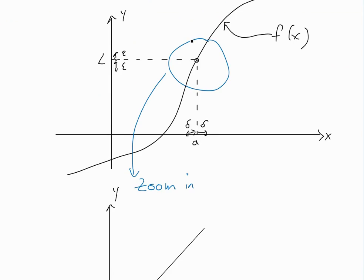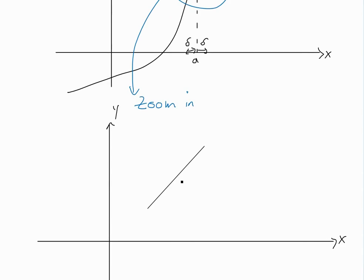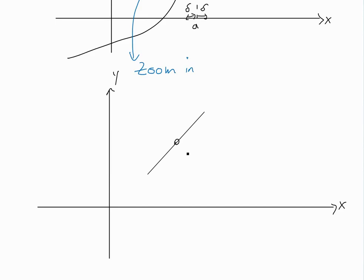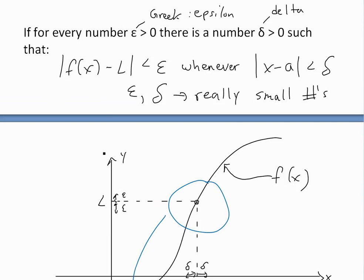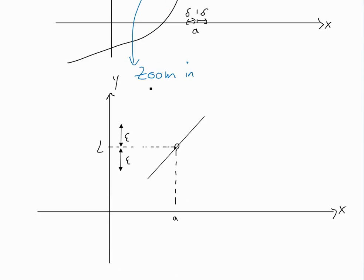Zooming in further, epsilon is just the distance away from the limit L — so the boundary above is L plus epsilon and below is L minus epsilon. What the precise definition says is that f of x must lie somewhere between these outer limits, meaning |f(x) − L| is less than epsilon. Similarly, delta gives us the boundary on the x-axis around a.